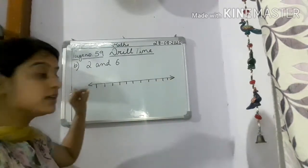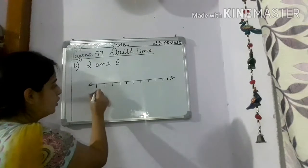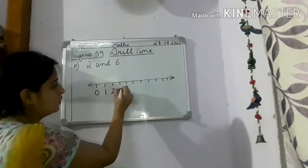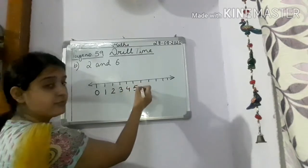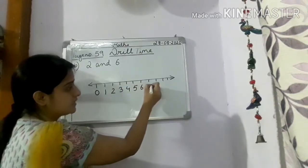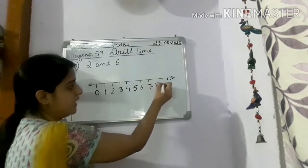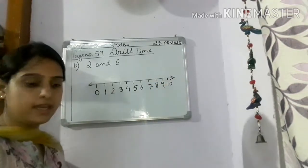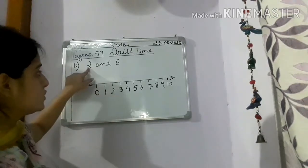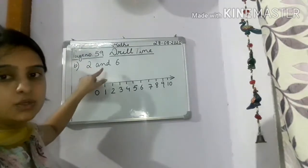Now what are we going to do? We are going to put number 0, 1, 2, 3, 4, 5, 6, 7, 8, 9, 10. Okay? Now we are going to do addition using number line.